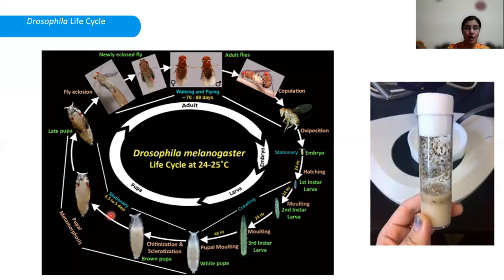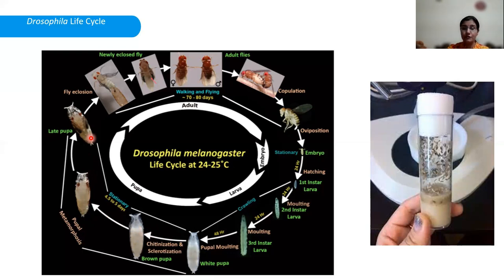The pupa is formed within the last larval cuticle, which in the beginning is soft and white. Gradually, this cuticle hardens and becomes darker in color due to chitinization and sclerotization. During the next four or five days, the pupa undergoes complete metamorphosis within the pupal case and emerges as an adult fly.